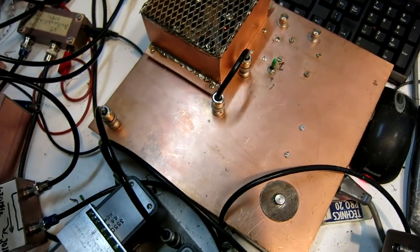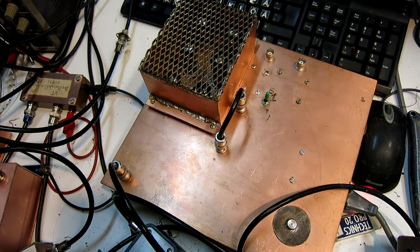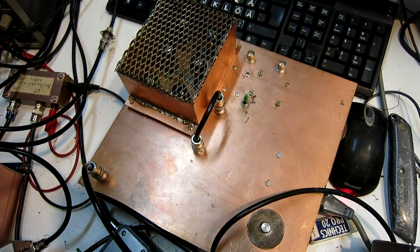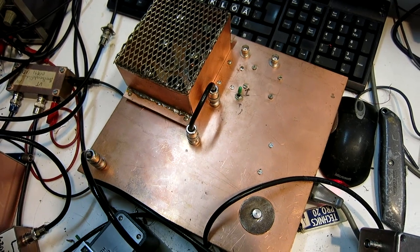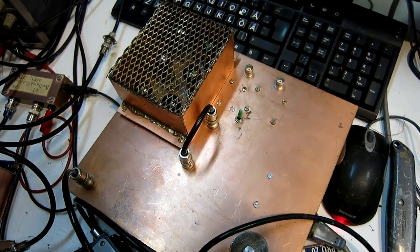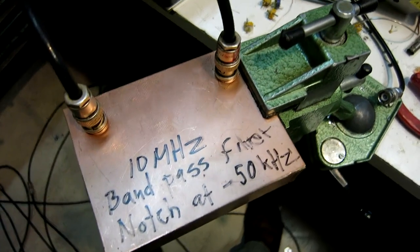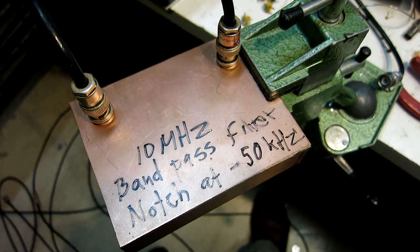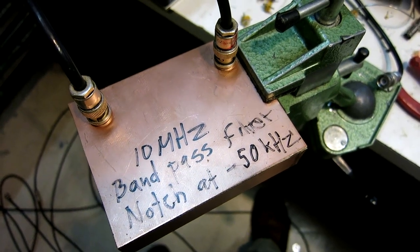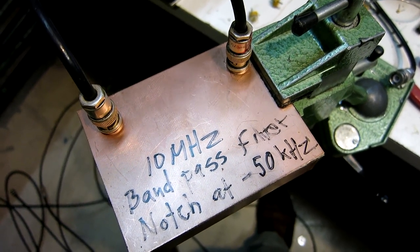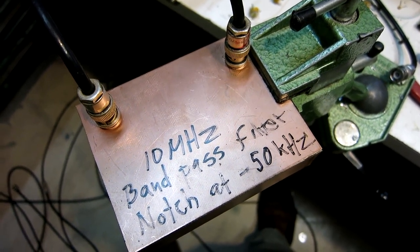I will use this vacuum tube low noise oscillator which is at something like minus 164 dBc per Hertz. After it I will use this notch filter.